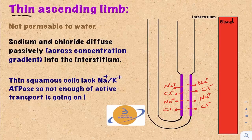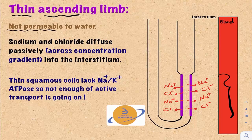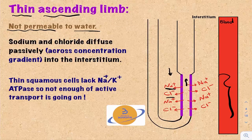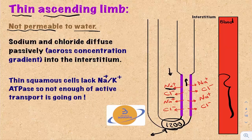The thin ascending limb of the Loop of Henle is not permeable to water. It's only permeable to solutes like sodium and chloride, which move from high concentration inside the tubular lumen into the relatively lower concentration in the medullary interstitium. At the bottom of the loop, the tubular filtrate equalized with the very high salty medullary interstitium.